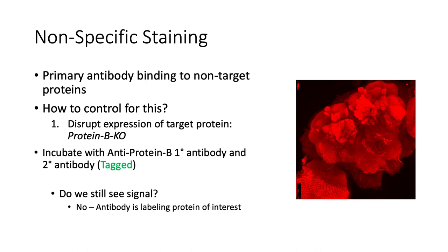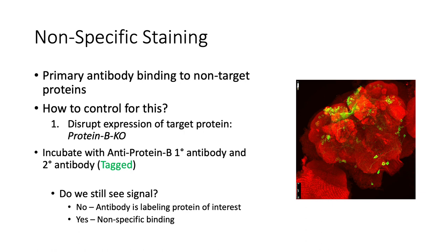If we do not see a signal after knocking out protein B, it means our primary antibody is labeling specifically against protein B. If we still see a signal after knocking out protein B, it means our antibody is labeling other proteins aside from our protein of interest. And so, this means that we need a different antibody.